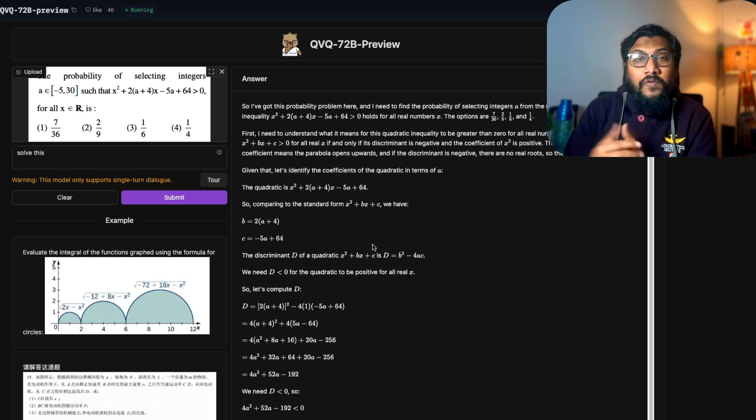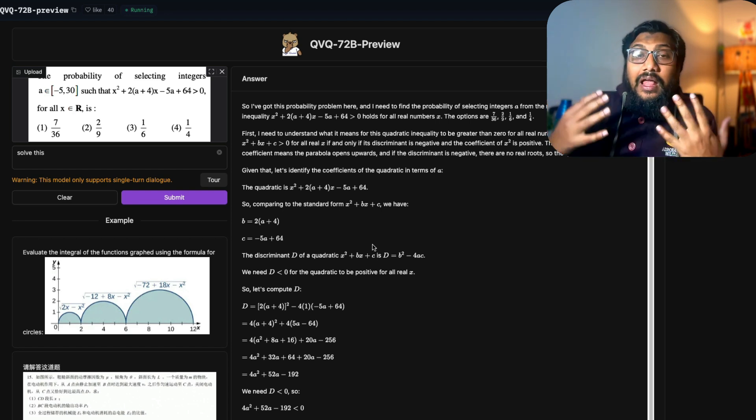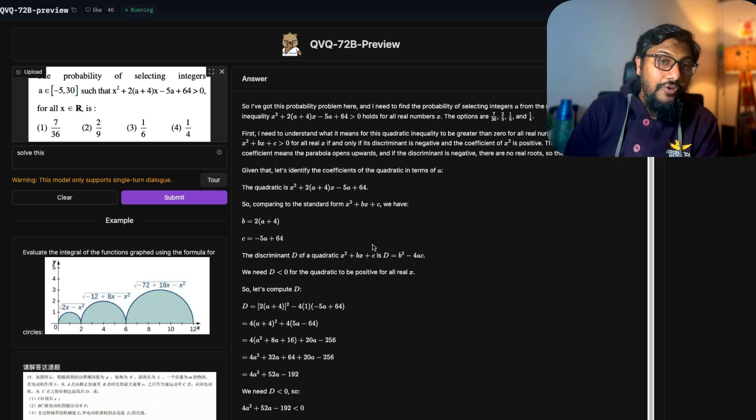It comes from China, from Alibaba, Qwen, QVQ, 72 billion. Very happy this model exists. I cannot wait to create more tutorials around this and I hope this can one day challenge the proprietary reasoning or thinking models that we have been getting. Let me know what you think about it. See you in another video. Happy prompting.